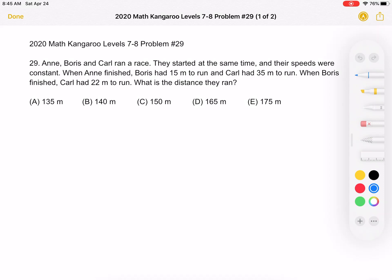What was the distance they ran? A, 135 meters; B, 140 meters; C, 150 meters; D, 165 meters; or E, 175 meters.